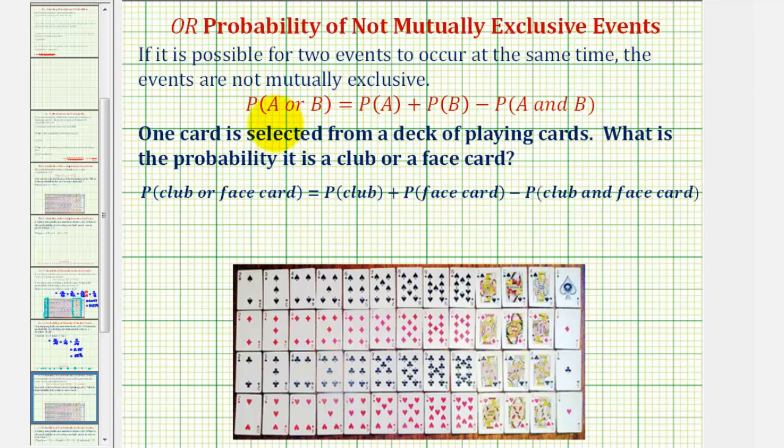Then the probability of A or B is equal to the probability of A plus the probability of B minus the probability of A and B. From our two examples, we'll see why we have to subtract this probability here.